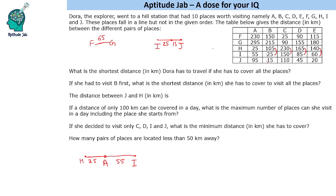Let us find the nearest places. I is here, so this 25 we get — this is B, and then B to J is 15. To verify: A to J is 40 plus 55, which is 95 — so that fits. So we have figured out 5 places. We checked these row-wise; now let us check the data column-wise.